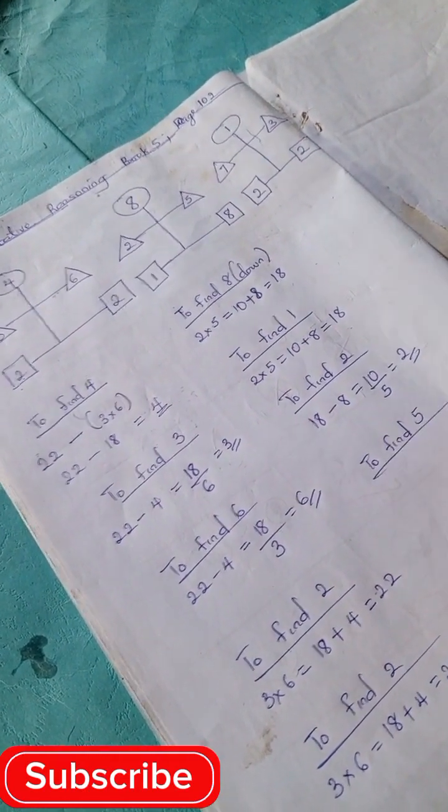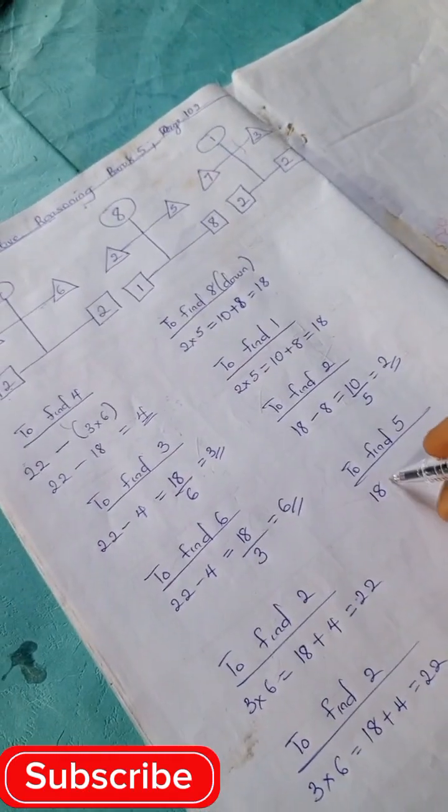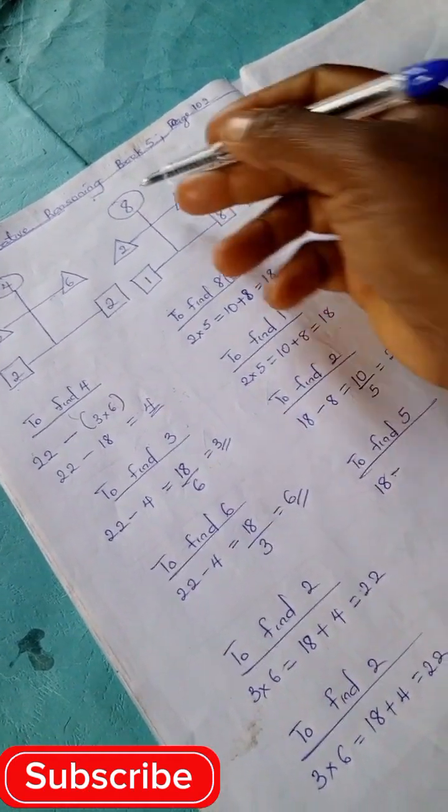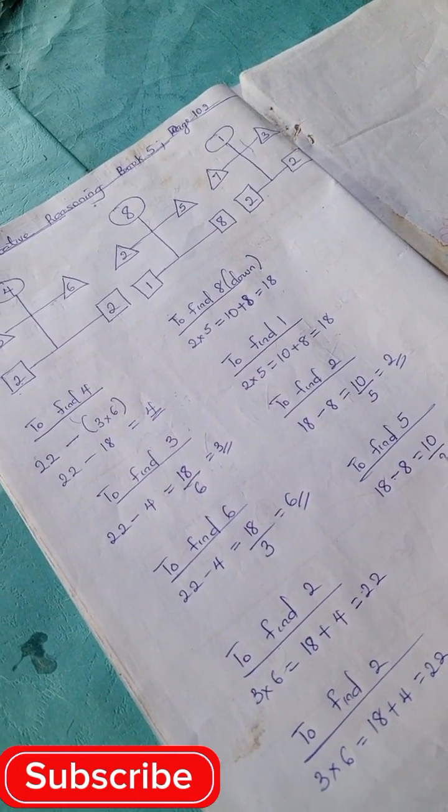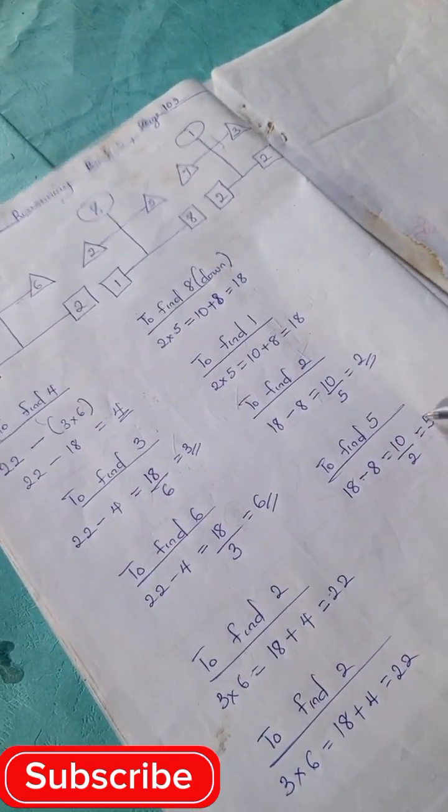To find 5, we have 18 (1 and 8) minus this 8 up equals 10. 10 divided by 2 we have 5.